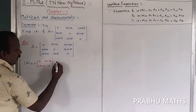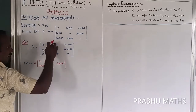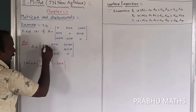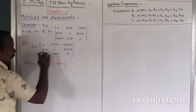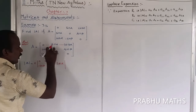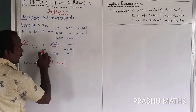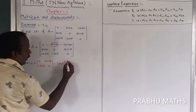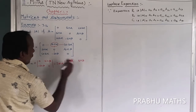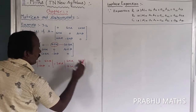Next, A12 gets a minus sign due to the cofactor sign rule — plus becomes minus, minus becomes plus. The element is sin α. The corresponding minor is the remaining 2x2 matrix after closing the entire row and column of A12, which gives the minor with entries [sin α, sin β; cos α, 0].